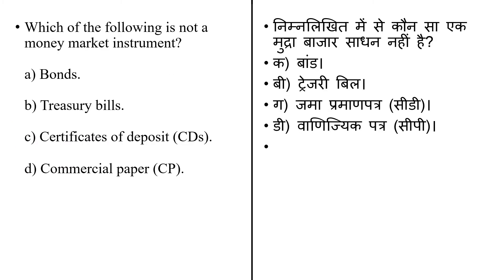Which of the following is not a money market instrument? The money market is a component of the economy providing short-term funds. It deals with short-term loans generally for a period of one year or less. It is a component of the financial market for assets involved in short-term borrowing, lending, buying and selling with original maturity of one year or less.